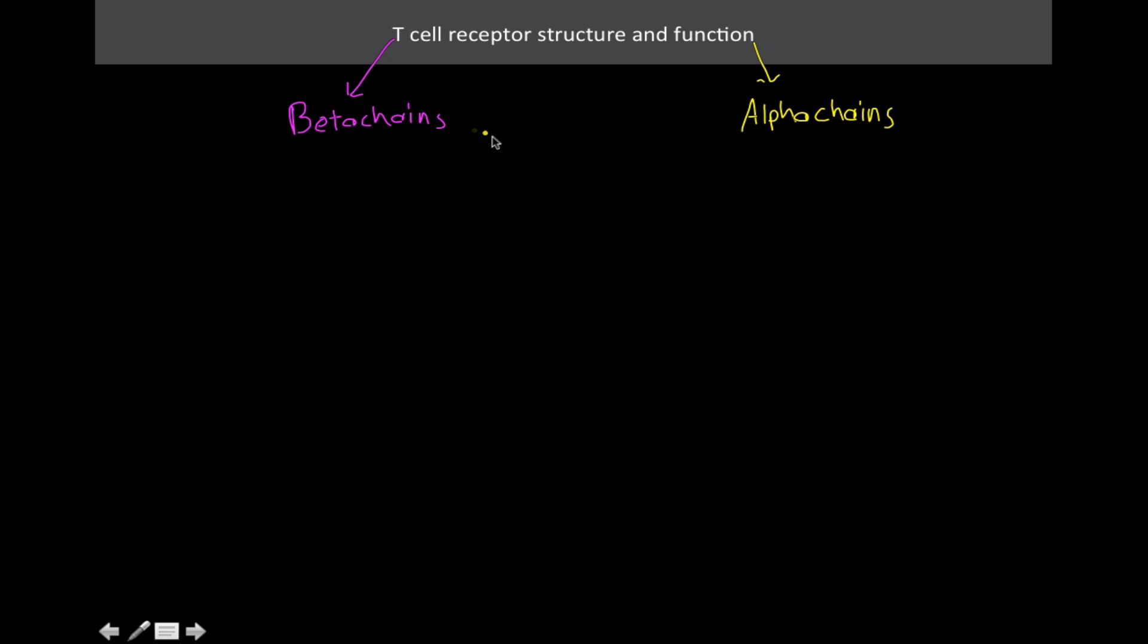There's two things that this is made out of - the beta chains and the alpha chains. These guys have homology to the B cell receptors. If the beta chains are homologous to the heavy chain, whereas the alpha chains are homologous to the light chains.